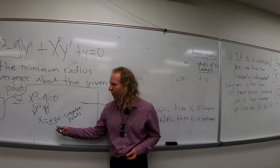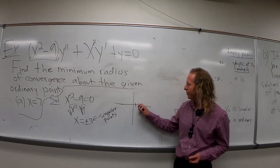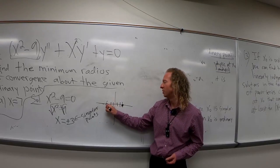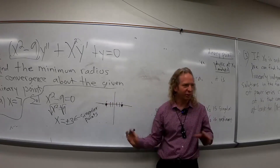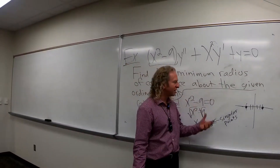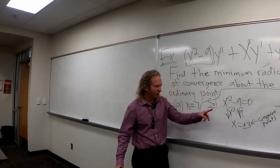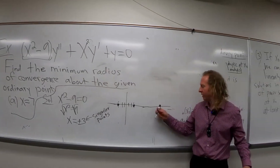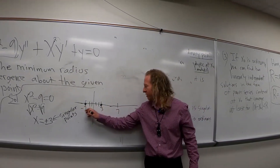So your singular points were three and negative three. That's the singular point at three, and that's the singular point at negative three. These are the bad points — bad singular points. So now we have to find R. R is the distance from the ordinary point to the closest singular point. I'm going to draw the ordinary point here on the graph. The ordinary point is over here — it'll be seven. And this is three and this is negative three.